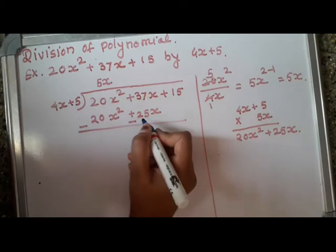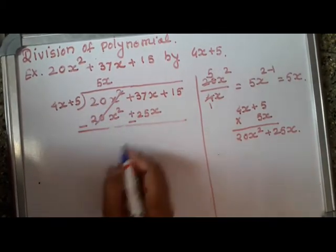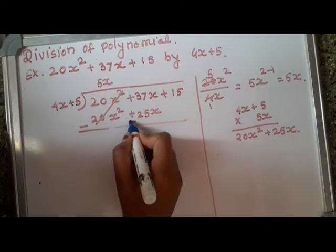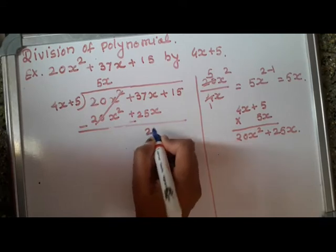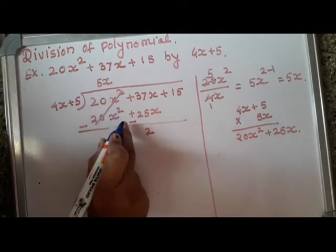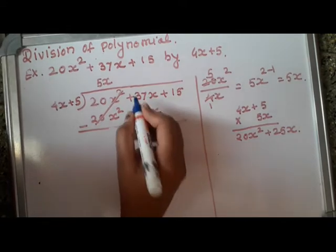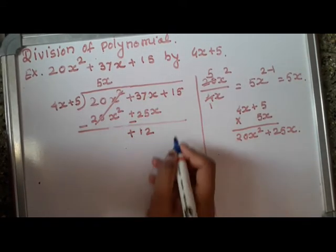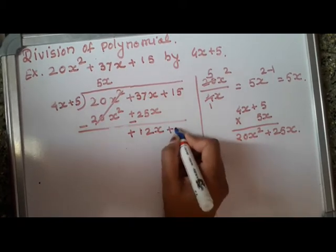So I will write here 20x square plus 25x by doing subtraction. I will change the signs of second polynomial here. These two will get cancelled. Plus 37 minus 25, it will become 7 minus 5 will be 2. We will do subtraction. One number is plus, another number is minus, so we will do subtraction and we will write the sign of bigger number, that is the sign of plus 37.